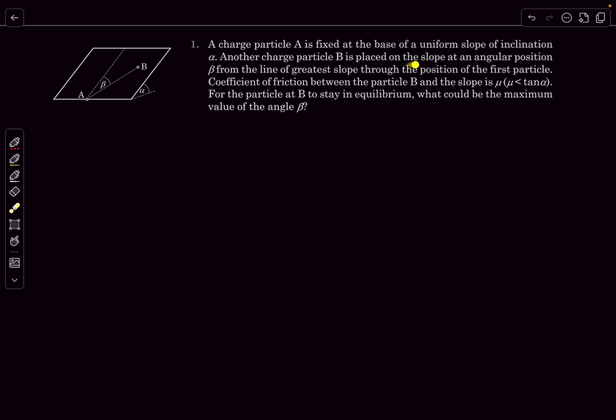Another charged particle B is placed on the slope at an angular position beta from the line of greatest slope through the position of the first particle. The line of greatest slope passing through the first particle is this line over here. The coefficient of friction between particle B and the slope is given to be mu, where mu is less than tan alpha.